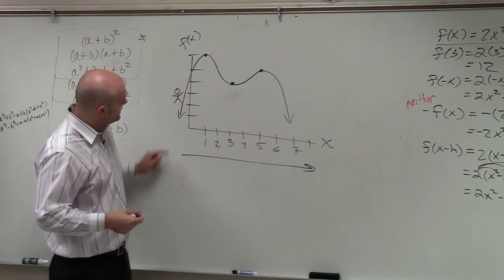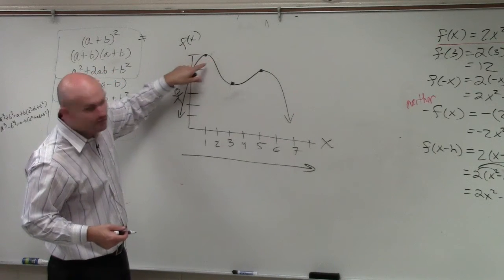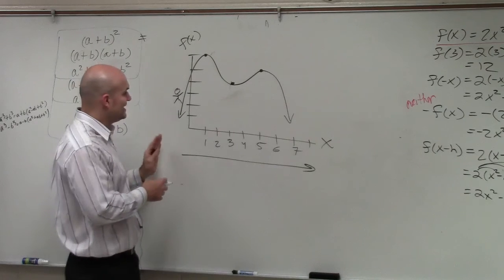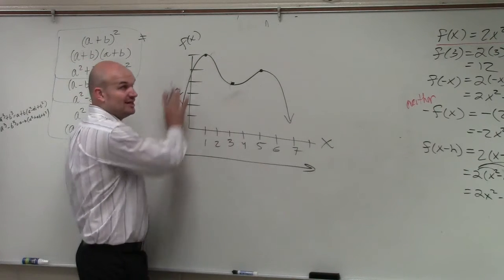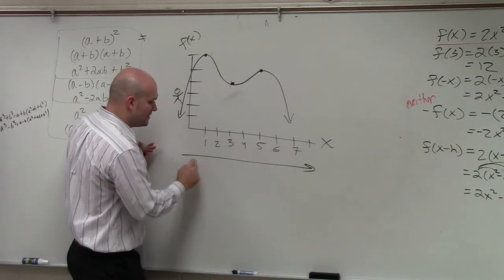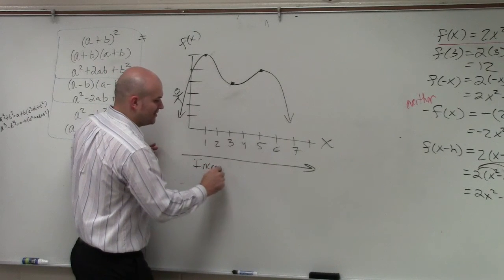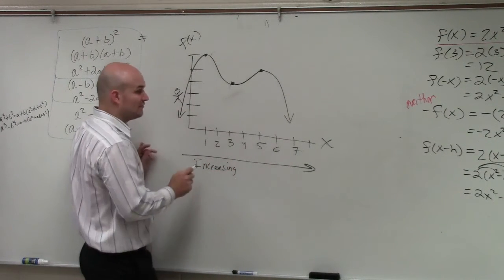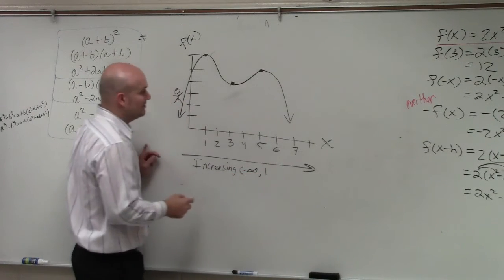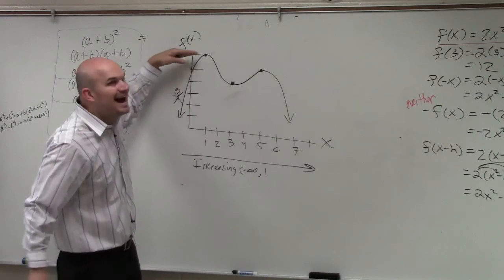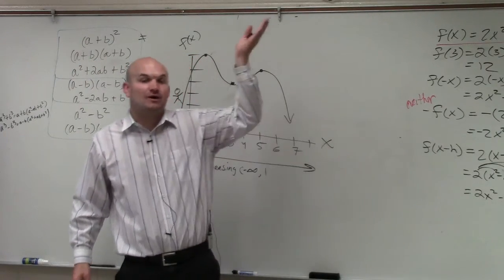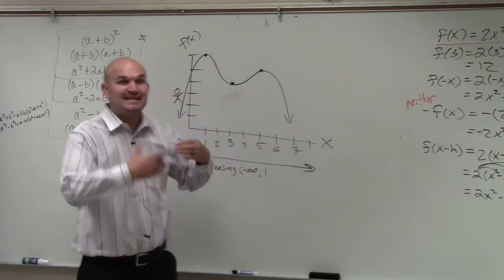So from negative infinity to the first interval, where it looks like it's changing, is 1, correct? So my increase — is my function increasing or decreasing from that value? Increasing. So what we'd write is: increasing on the interval negative infinity to 1. I'm not concerned how high the function is. I'm not saying it's increasing from this amount to how high this amount. I'm just saying from the x interval.